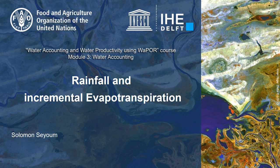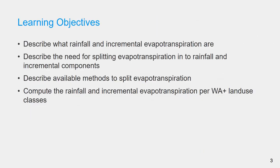The unit consists of this short video, an exercise to reclassify VAPO land cover categories to water accounting plus land use categories, and compute precipitation, rainfall, and incremental evapotranspiration volumes for these land use categories. There will also be a quiz to test your understanding. After following this unit, you will be able to describe what rainfall and incremental evapotranspiration mean.